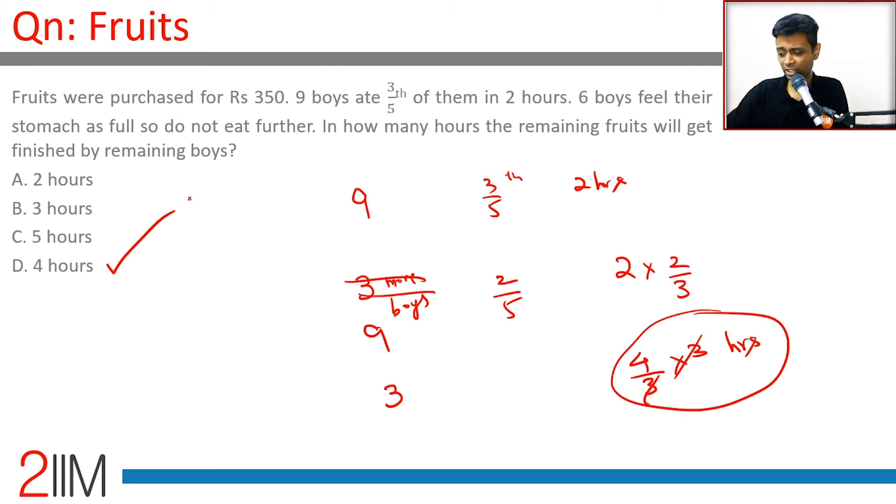Do this as simple ratios. Let's assume 9 boys. We know that 9 boys finished 3/5. Let's assume all 9 boys are still there. To do the remaining 2/5, they will take 2 × 2/3.